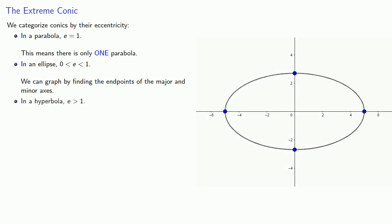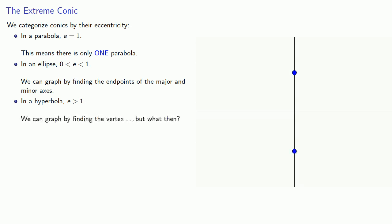And in a hyperbola, the eccentricity is greater than 1. And we can graph these by finding the vertex, but what then? The problem is there's an infinite number of hyperbolas with the same vertex, and so we need a way to distinguish between them. To solve this geometric problem, we'll do a little bit of algebra.